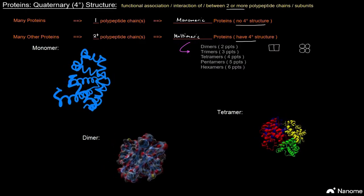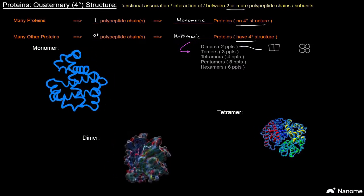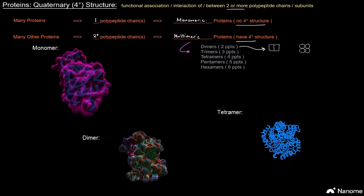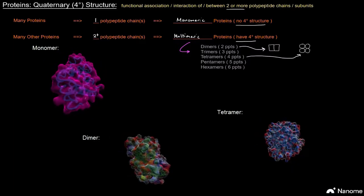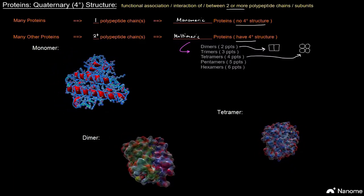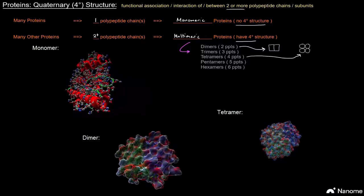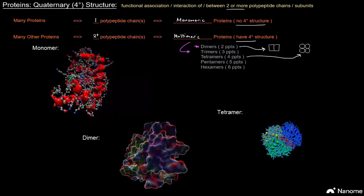So here I've got a little dimer right there, and then over here I've got a little tetramer right there for subunits. And dimers and tetramers tend to actually be the most commonly seen.